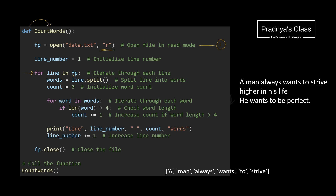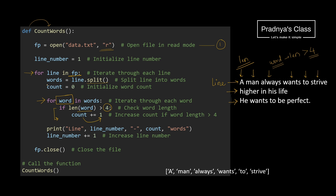We are iterating over each line of the file without using any readline function — we take the help of the file pointer to iterate over the content line by line. In this variable we are getting one line at a time. Using the split function we are splitting the line into words, giving us a list of strings. Now we need to check the length of each word, so we are using one more for loop. In the variable 'word' we are getting the individual word. It is a nested loop — outer loop iterates over each line, inner loop iterates over each word.